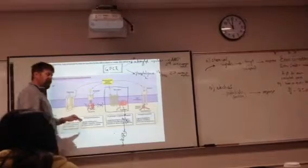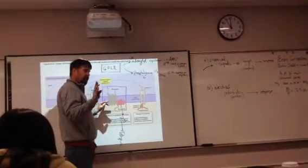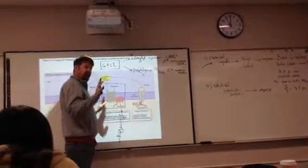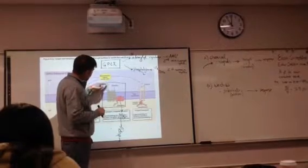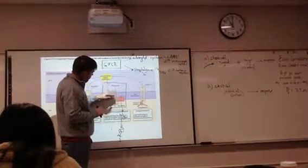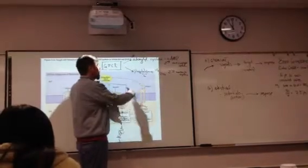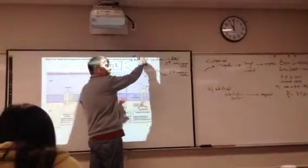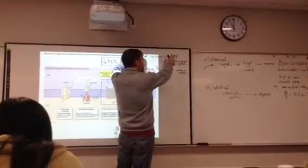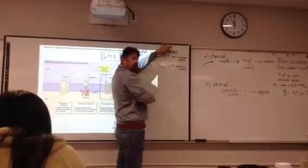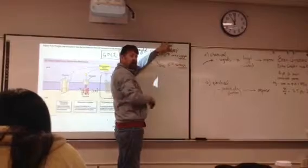So essentially what happens is—now just listen and I'll show you the details in a minute—if a signal binds to the receptor and activates the G-protein, the G-protein will activate adenylyl cyclase, and adenylyl cyclase will turn ATP into cyclic AMP. You now have the second messenger.